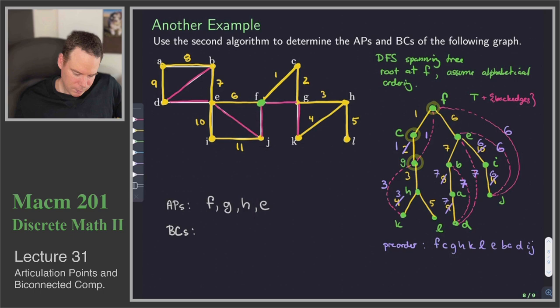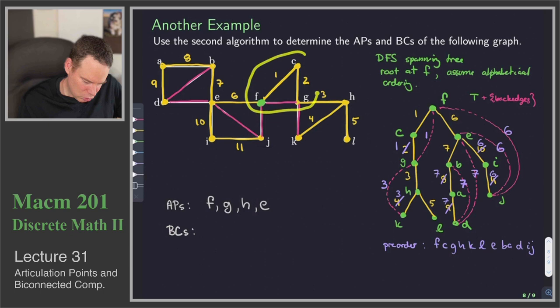So then I look back to my graph and I find F, C, and G. And there's a biconnected component. So it's going to look like C, F, and G.